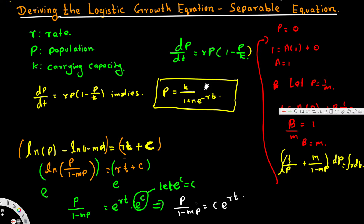Now we need to derive the target equation. We have p over (1 minus mp) equal to C·e^(rt). We need to rearrange in terms of p. So p equals (1 minus mp) times C·e^(rt). We still don't have k here — we need to get k back.